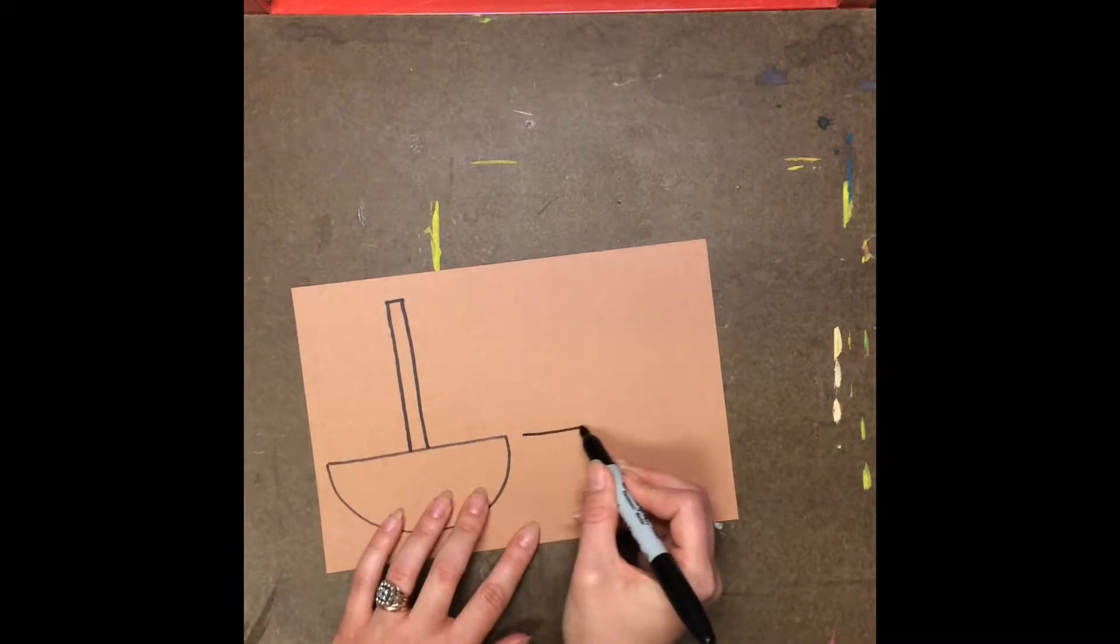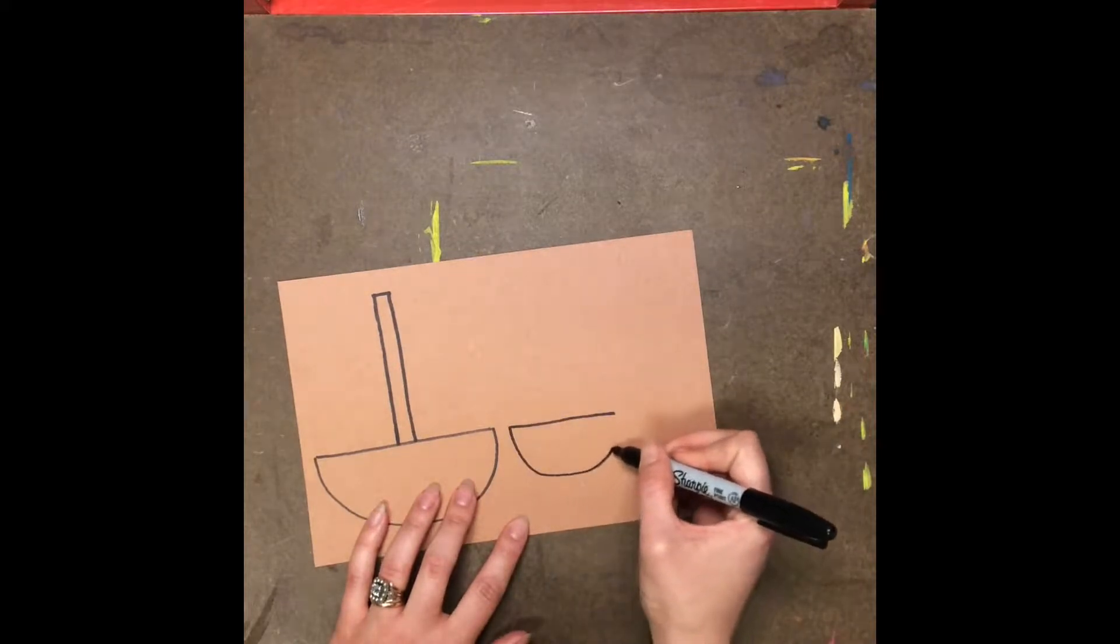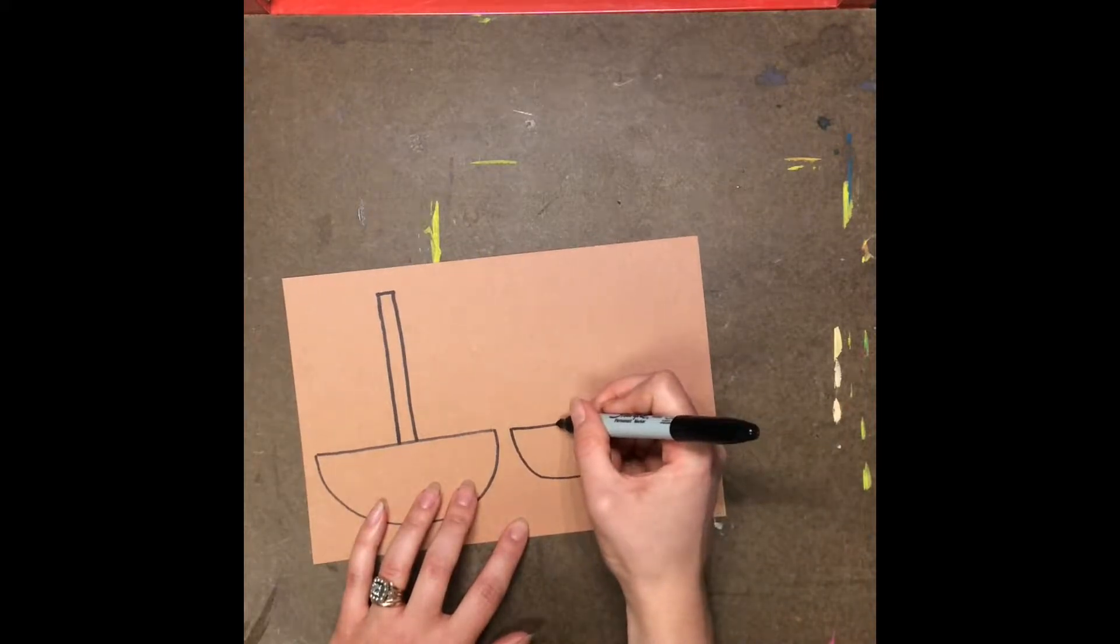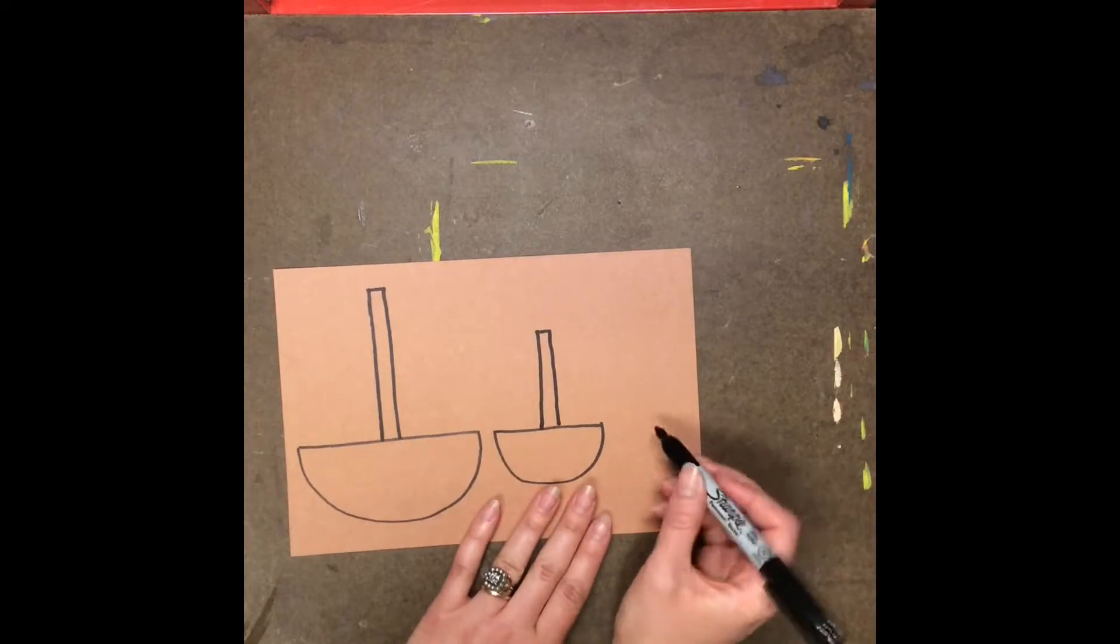Now I'm going to do a medium-sized boat. This triangle is not going to be quite as tall since it's just medium-sized. And then I left just enough room to do my small boat.